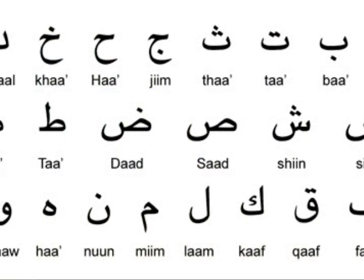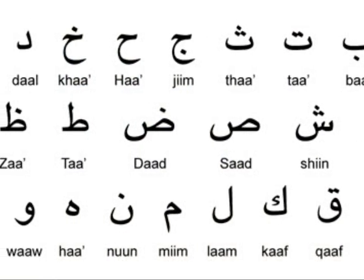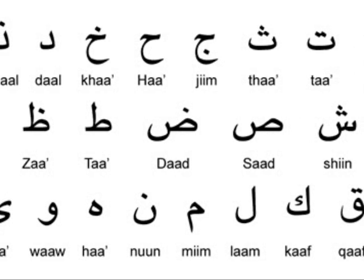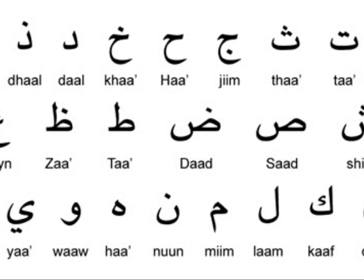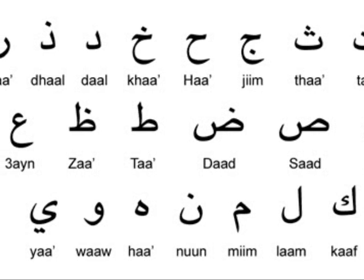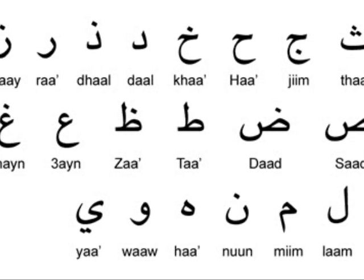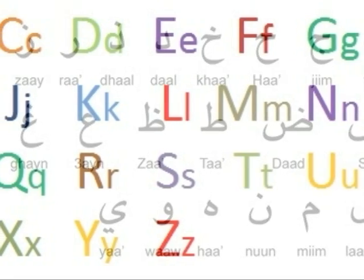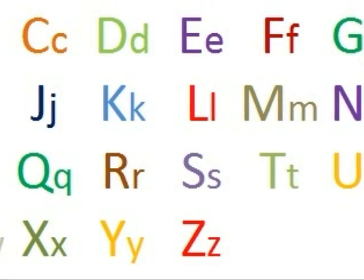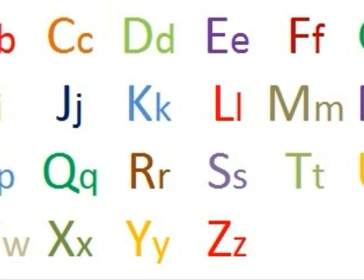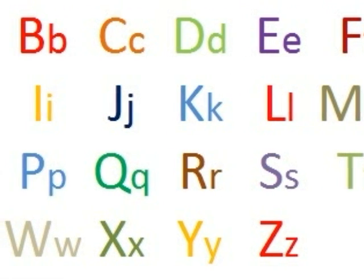In the Arabic alphabet, there are 28 consonants. In the English alphabet, there are 24 consonants.